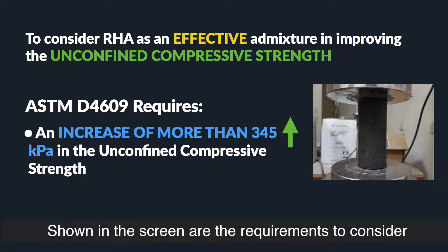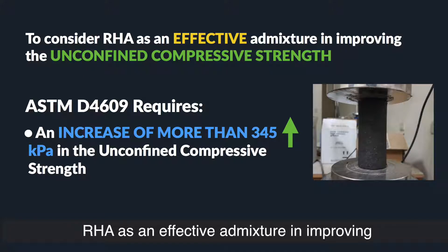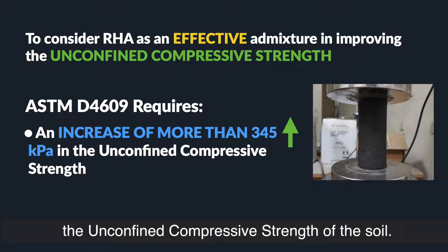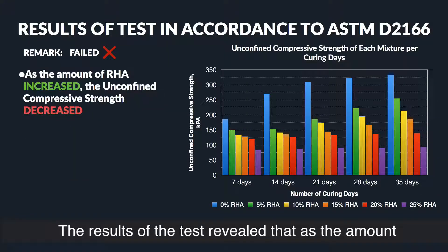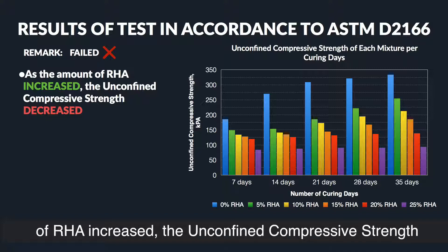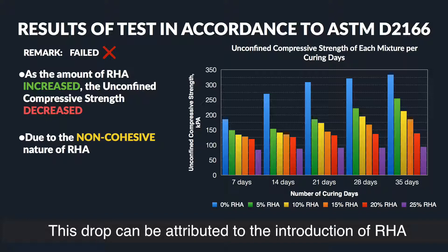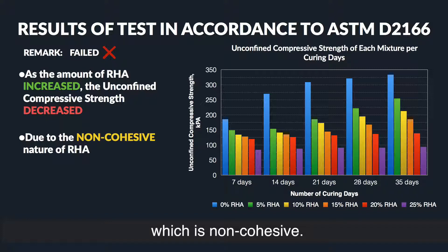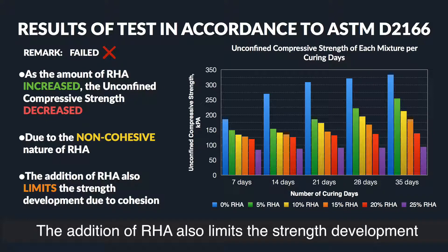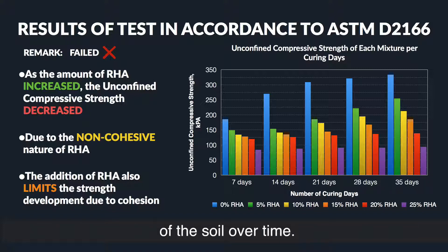Shown on screen are the requirements to consider RHA as an effective admixture in improving the unconfined compressive strength of the soil. The results of the test revealed that as the amount of RHA increased, the unconfined compressive strength of the soil decreased. This drop can be attributed to the non-cohesive nature of RHA. The addition of RHA also limits the strength development of the soil over time.